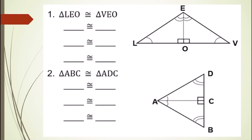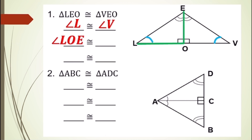So now, let's answer number one. We have triangle LEO is congruent to triangle VEO. Our first pair of congruent angles is angle L is congruent to angle V. Our second pair of congruent angles is angle LOE is congruent to angle VOE. And for our third pair of congruent angles, we have angle OEL is congruent to angle OED.